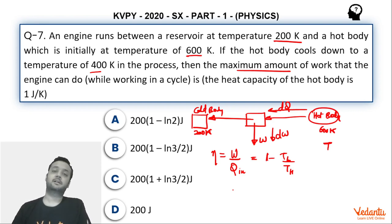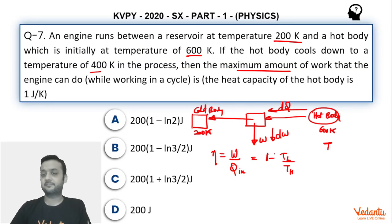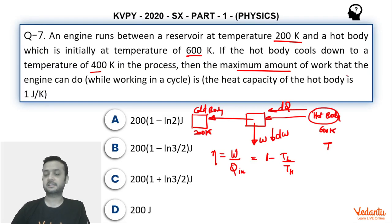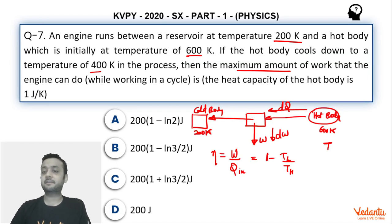We will assume that efficiency equals Carnot engine efficiency since maximum efficiency. We will write efficiency as DW upon DQ, which is 1 minus T cold upon T high. T high is T because T is the instantaneous temperature of this hot body. So 1 minus 200 by T.